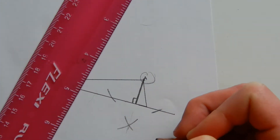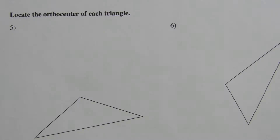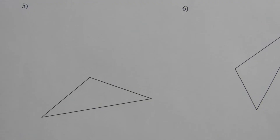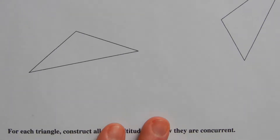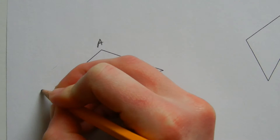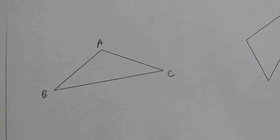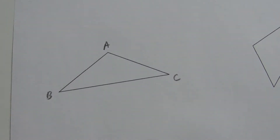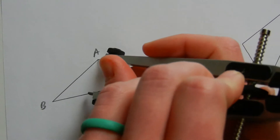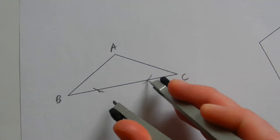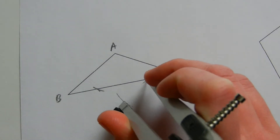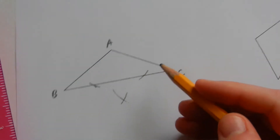Let's continue on to the second page. For numbers 5 and 6, I'm going to be locating the orthocenter of each triangle. The orthocenter is the intersection of altitudes. In a triangle we can create three altitudes and they all intersect at that same point — the orthocenter — so we only need two to find that intersection. For number 5, I'll label my triangle A B C and start by finding the altitude associated with vertex A. Taking my compass, I'll make marks on segment BC the same distance away from A, then adjust my compass to a little more than halfway between those intersections to draw my altitude.